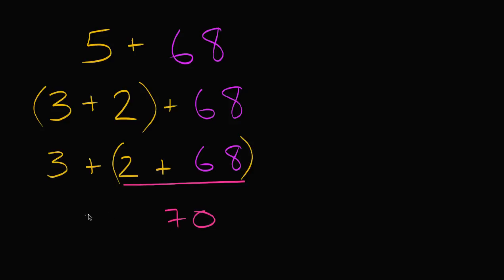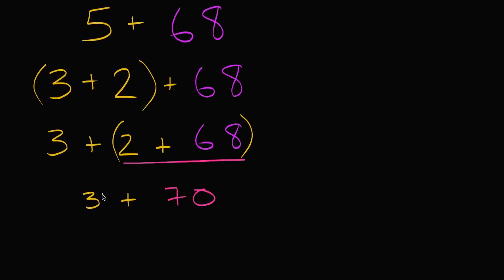70, and I still have this three here. So I have three plus 70, which is equal to 73. 73.